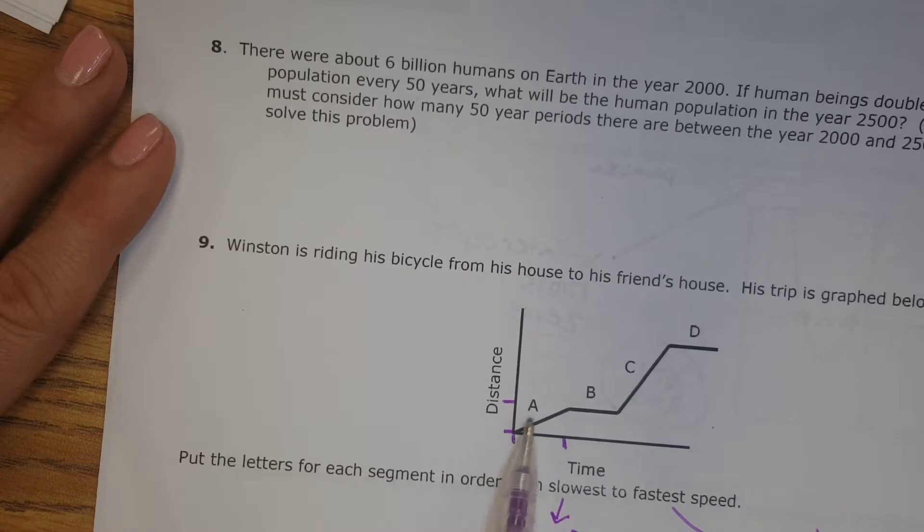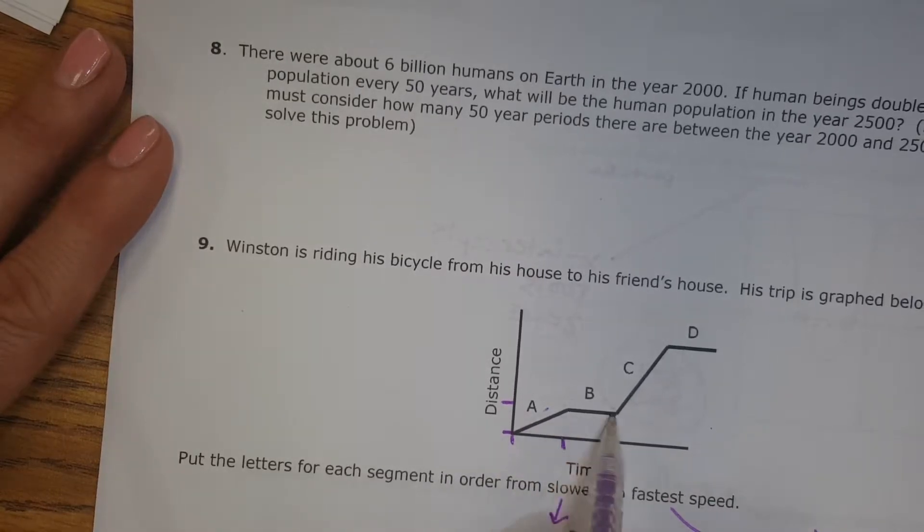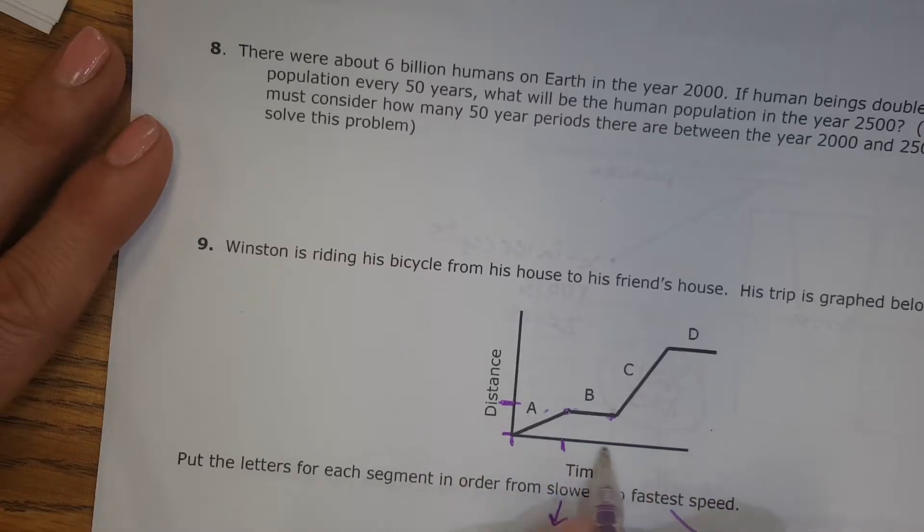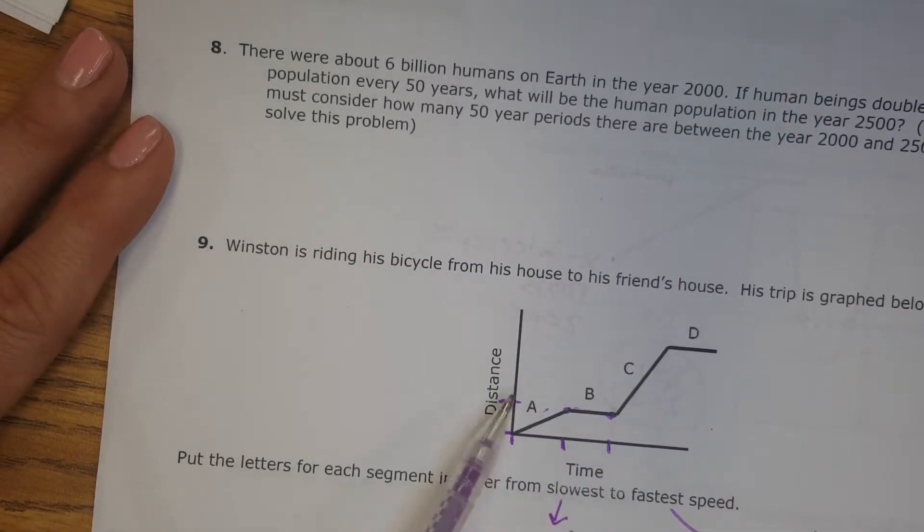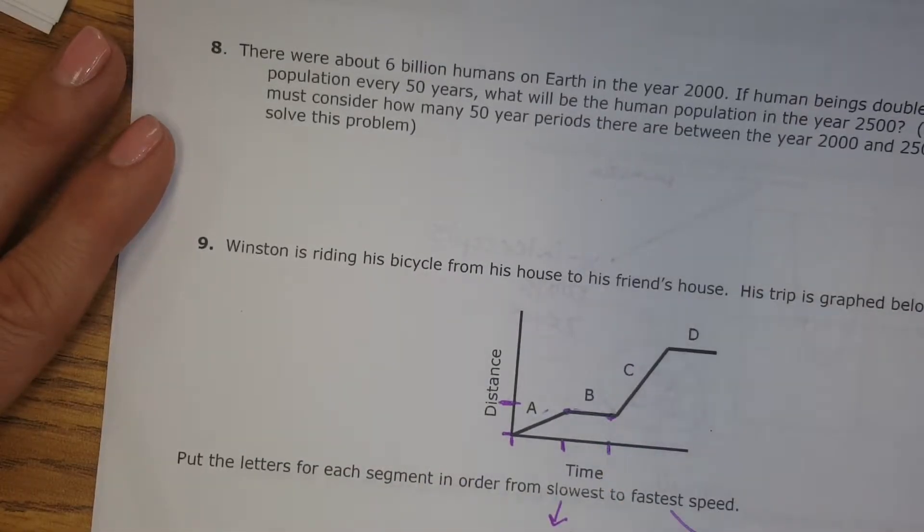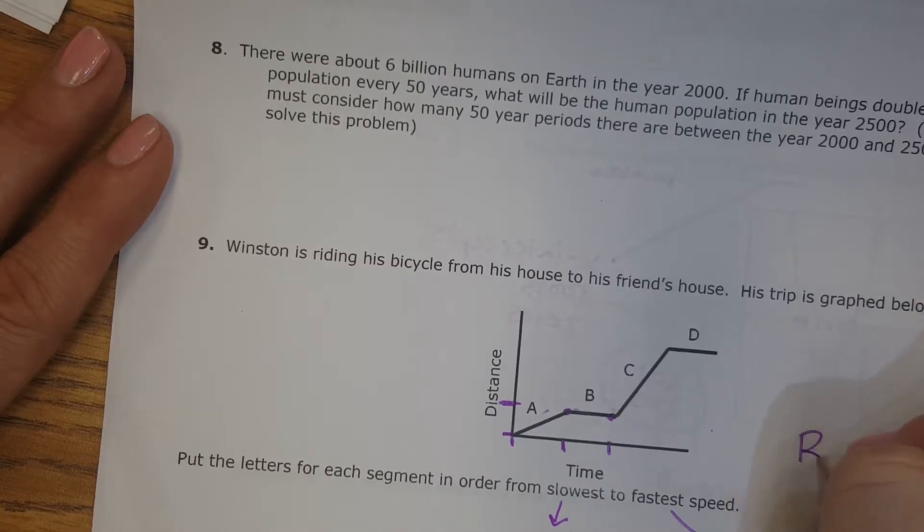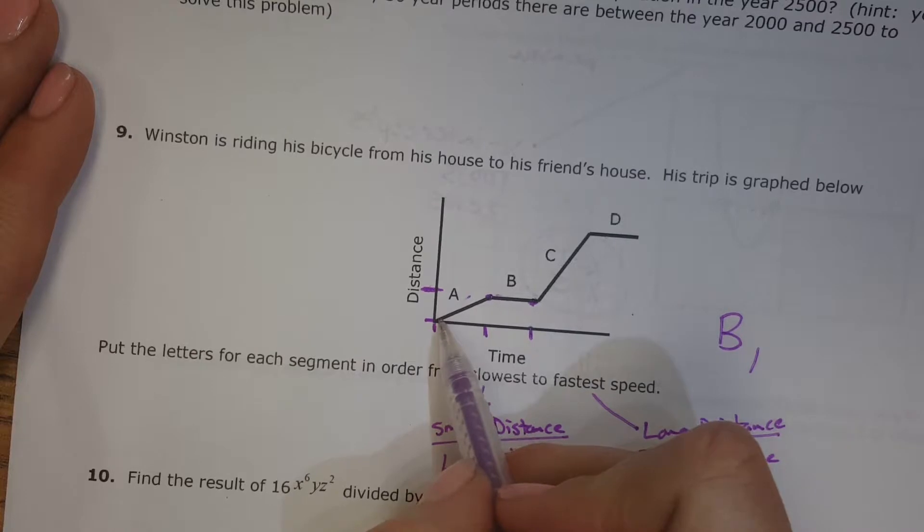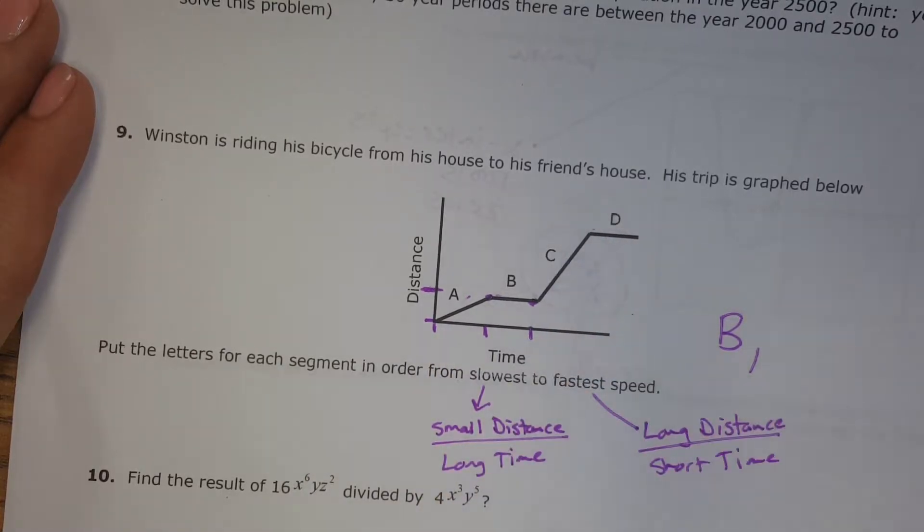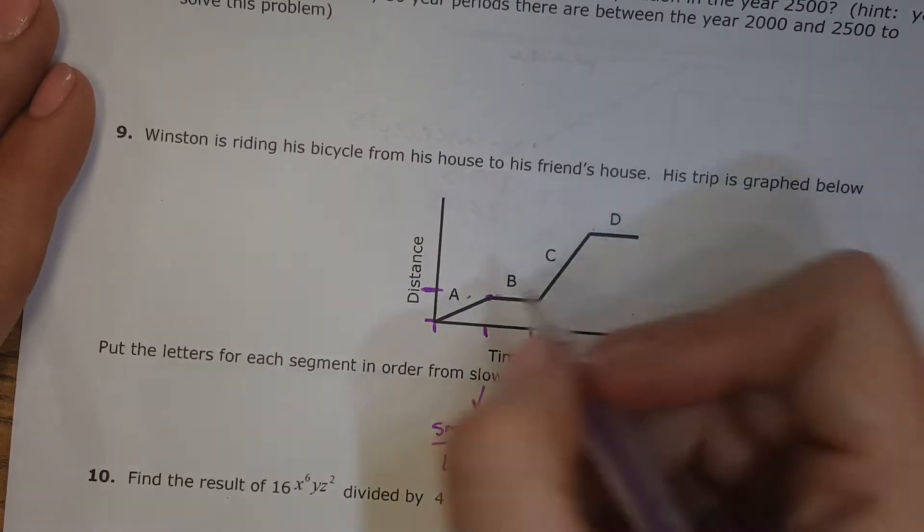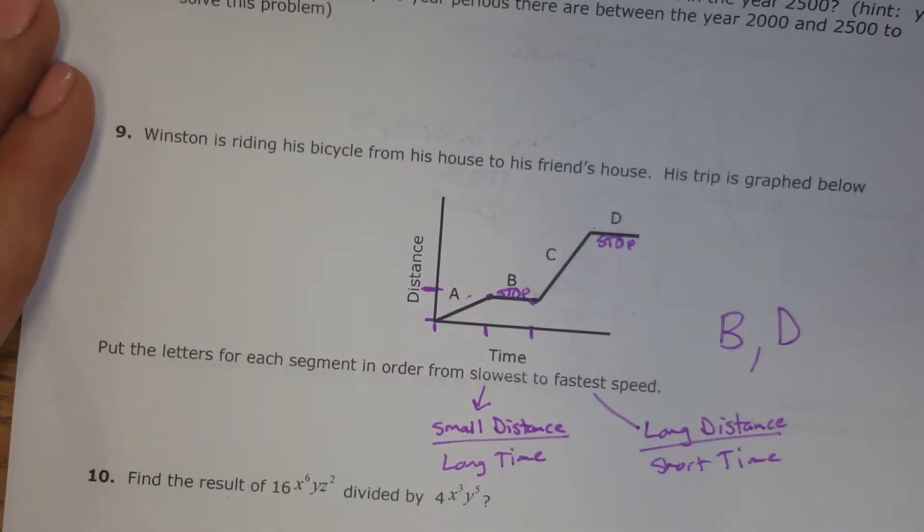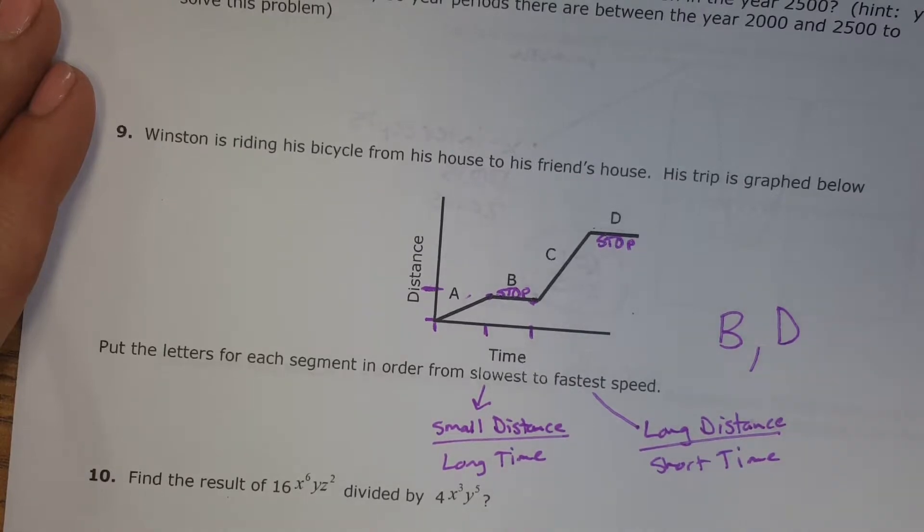So when it goes the smallest distance in the longest amount of time, that's when it's going slow. So this is pretty slow. This part right here, its distance hasn't even changed. It goes from here to here. Time kept going, but they didn't move any distance up. So B is the slowest. And then D is also the slowest. They're both stopped. This is stopped. And this is stopped. So it really doesn't matter which order you put those in, because they're both stopped. They're the same speed. Zero.